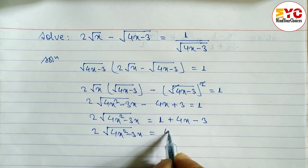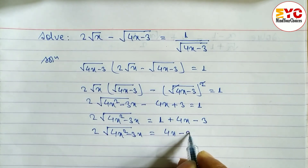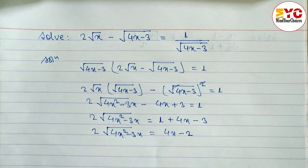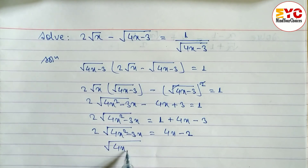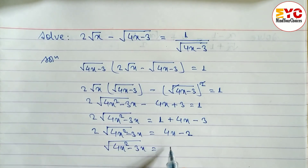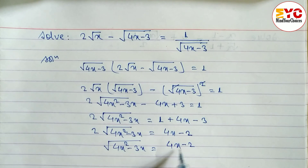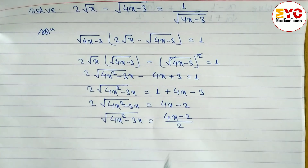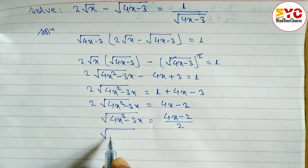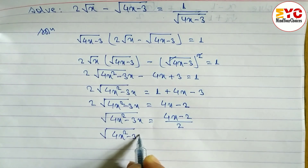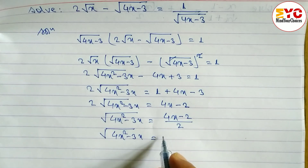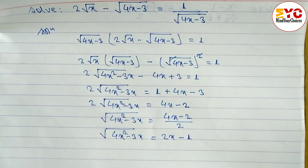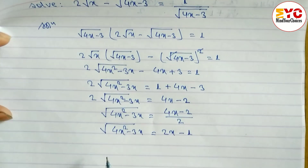So: 2 root under (4x squared minus 3x) is equal to 4x minus 2 — which is 1 minus 3. Hope you understand up to here. Now there is a 2, so we divide both terms by 2. We take 2 common: root under (4x squared minus 3x) is equal to 4/2 which is 2x, minus 2/2 which is 1.